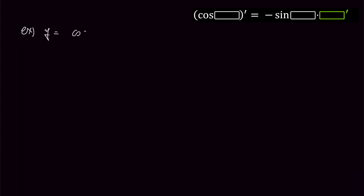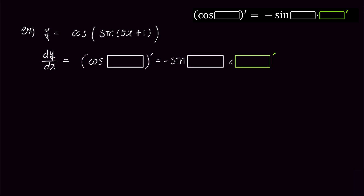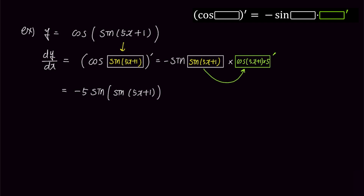From now on, let's tackle slightly more complex problems. Let's differentiate y equals cosine of sine of 5x plus 1. We'll use the formula shown in the top right and put sine of 5x plus 1 into the box. Similarly, we'll put sine of 5x plus 1 into the right box as well. To find the value for the box prime, we need to differentiate sine of 5x plus 1 inside the previous box. The derivative of sine of 5x plus 1 is cosine of 5x plus 1 times 5. Placing this into the green box prime and simplifying, bringing the 5 forward, the answer becomes negative 5 times sine of sine of 5x plus 1 times cosine of 5x plus 1.